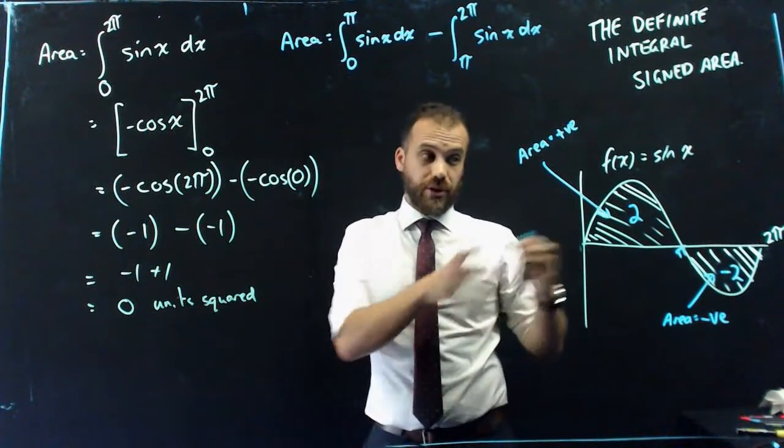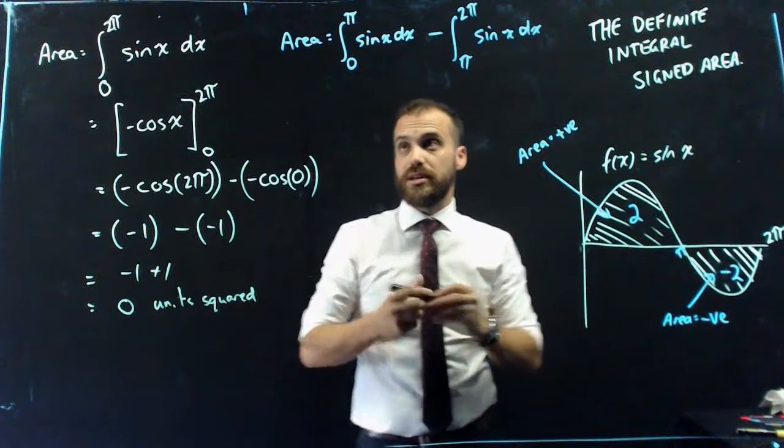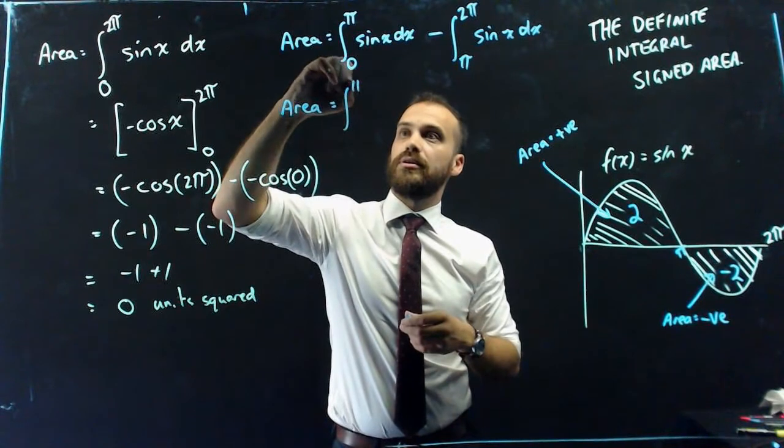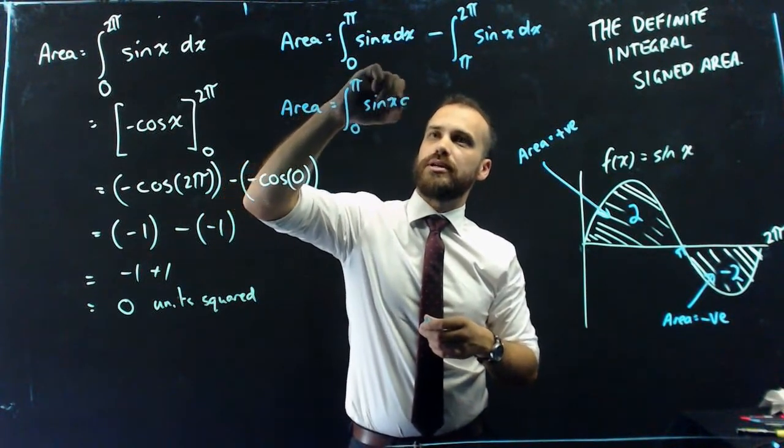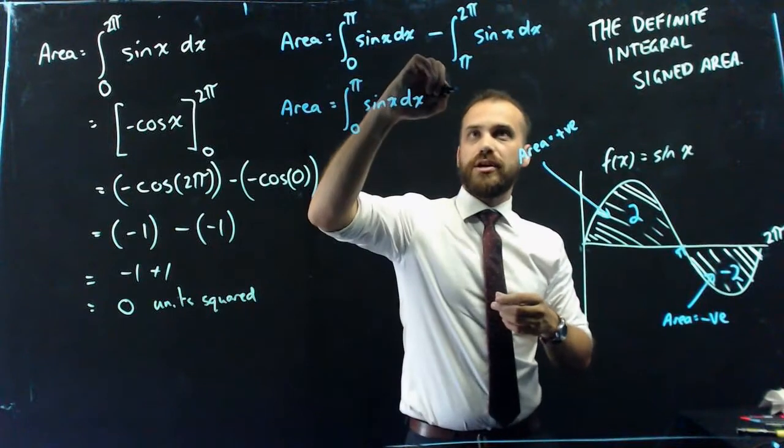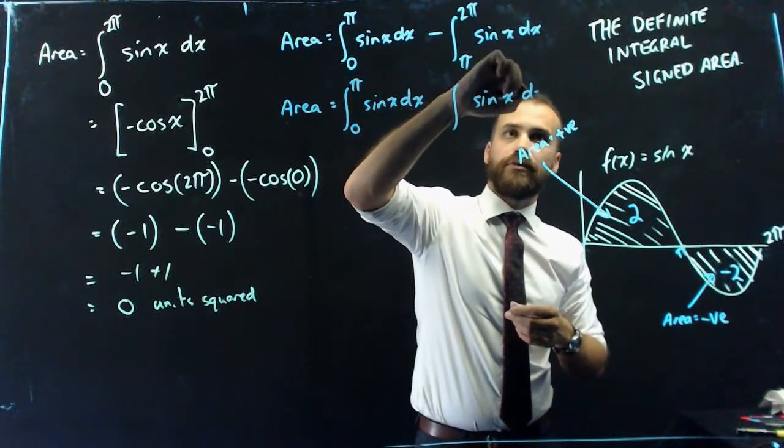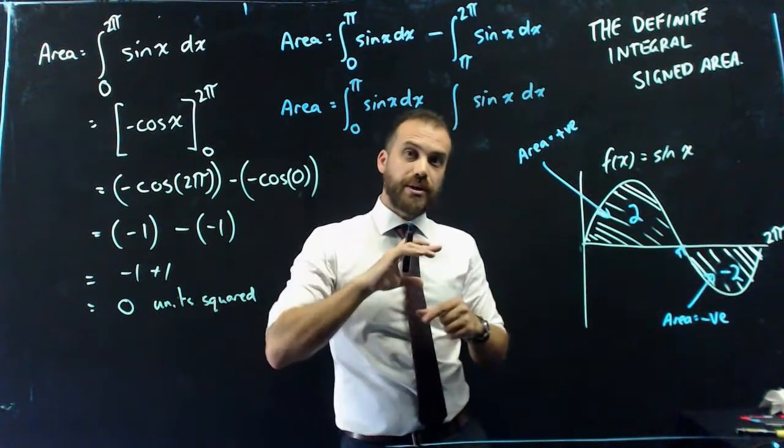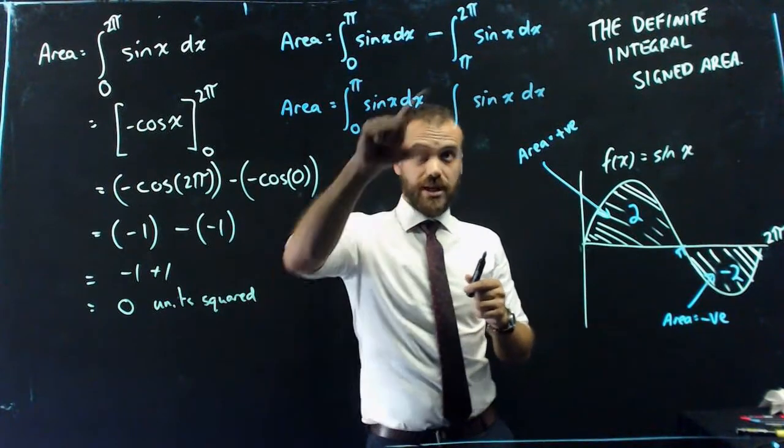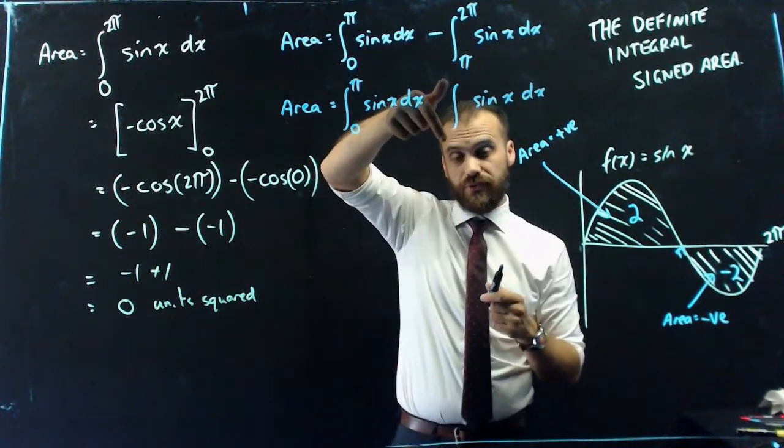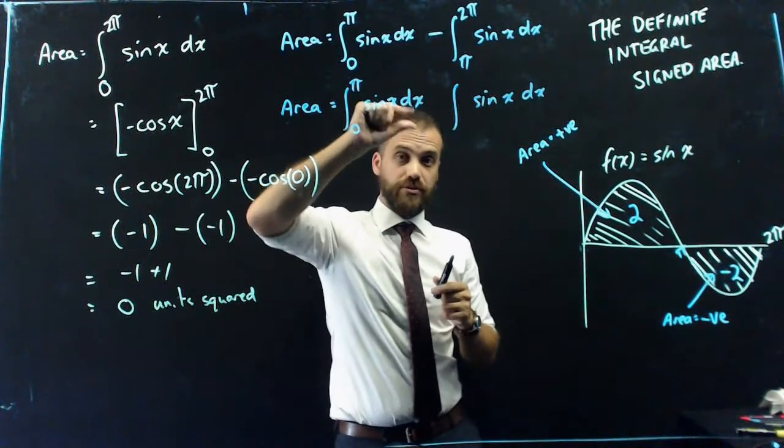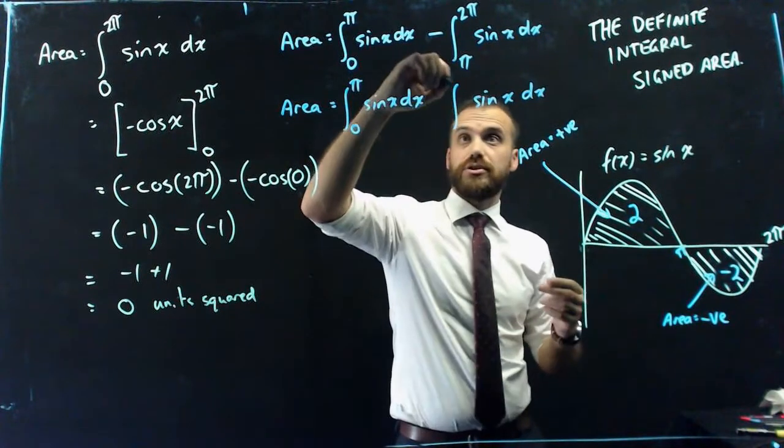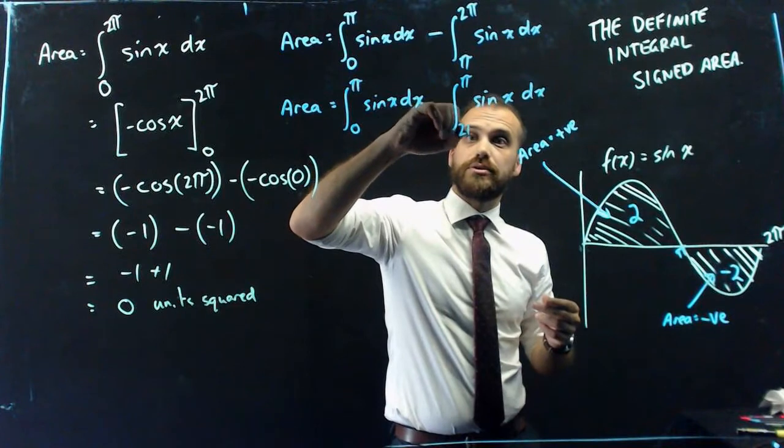There is an alternative method that I could have used to sort of combat this signed area. So I could have said, alright, let's find the area of the top half, pi to zero, sin x with respect to x. Let's find the area of this bottom bit. But let's do something tricky so that we don't get an answer of negative 2, we get an answer of 2. What we can do is take the terminals and reverse them. If we take the terminals and reverse them, it's not going to give us an answer of negative 2 anymore, it's going to give us an answer of positive 2. So pi 2pi.